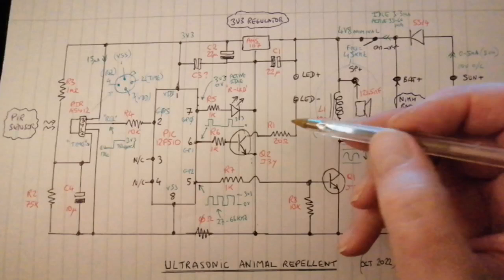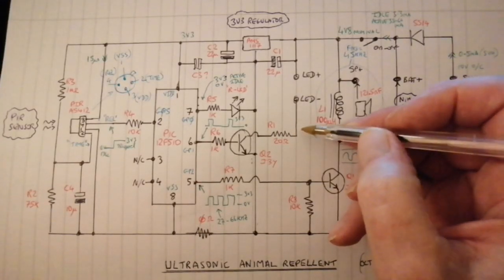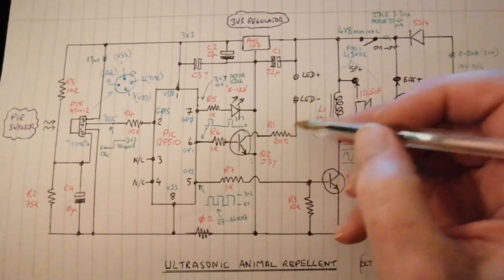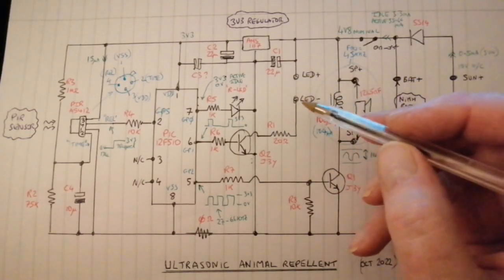Note that this output pulses on for about half a second and off for about one and a half seconds, which I guess is supposed to be a deterrent for the animal.